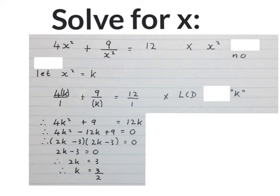But they did not ask us here to solve for K. They asked us to solve for x. So then I'm going to go back to what I did here. We made x squared equal to K, so K is equal to x squared. Then you write x squared is equal to 3 over 2, because that x squared is K.